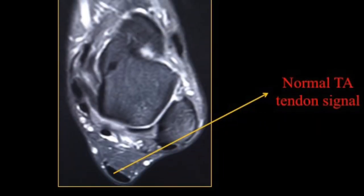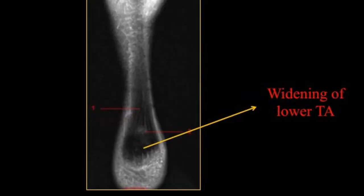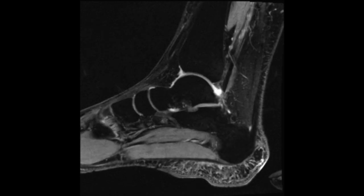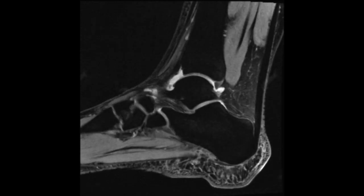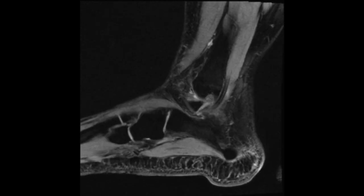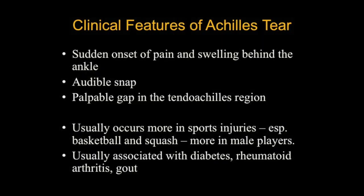Another normal tendo Achilles in axial sections, and as mentioned it widens out as it reaches distally — this is a coronal section showing this. So we again see a normal video of the normal tendo Achilles, the sagittal sequence taken here.